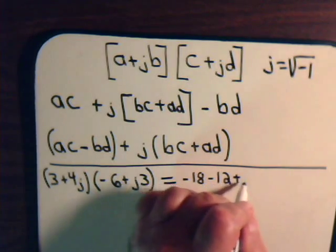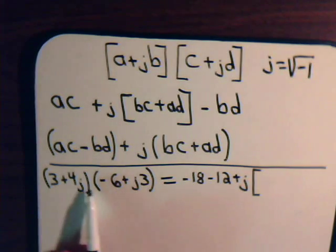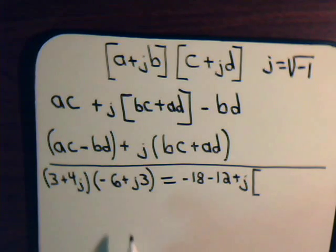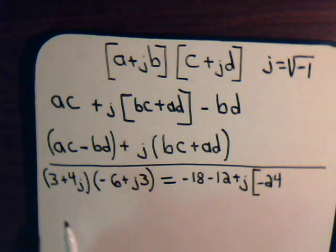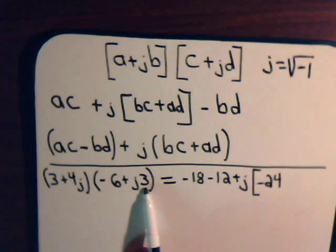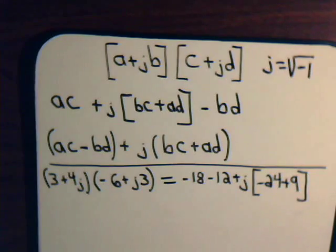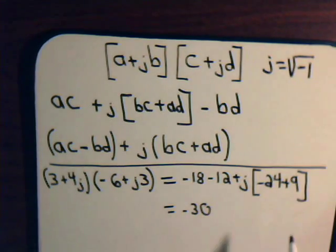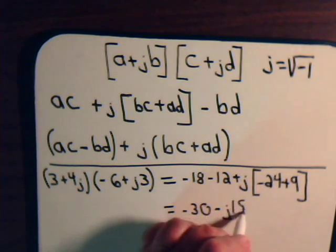The imaginary component comes from the inner product: minus 6 times 4 is minus 24, and 3 times 3 is plus 9j. Combining the real parts: minus 18 minus 12 equals minus 30. And minus 24 plus 9 gives minus j times 15. So the result is minus 30 minus j15.